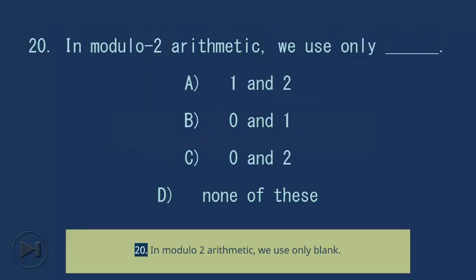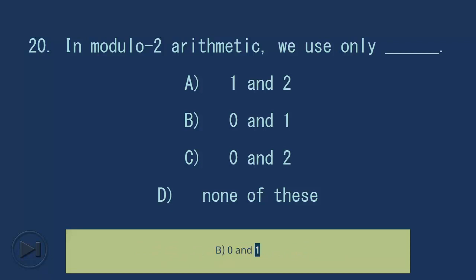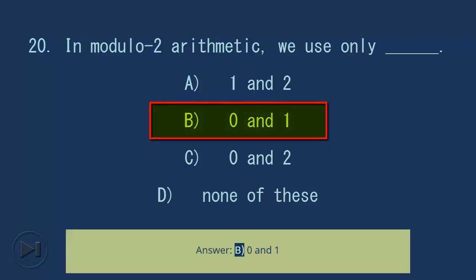Question 20: In modulo 2 arithmetic we use only blank. A) 1 and 2, B) 0 and 1, C) 0 and 2, D) none of these. Answer: B, 0 and 1.